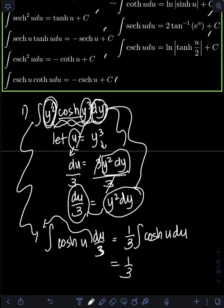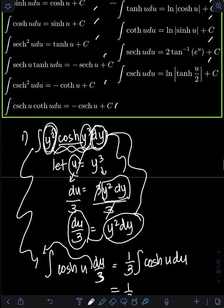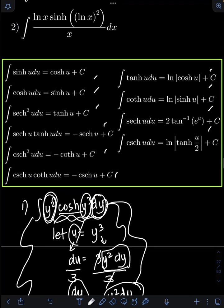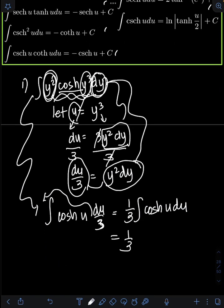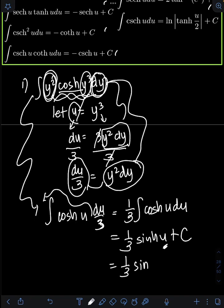So I will have one-third times the integral of cosh(u) du. Looking at the formula, the integral of cosh(u) du is equal to sinh(u) plus C. So therefore the answer is one-third sinh(u) plus C. Don't forget to transform back u in terms of the original variable — u equals y cubed. So the final answer is one-third sinh(y³) + C.